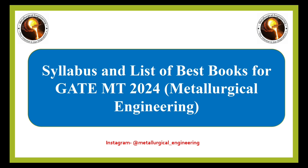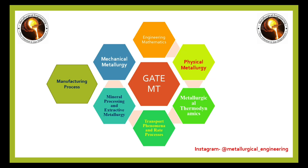These are the sections which are important for the GATE Metallurgical Engineering examination every year: first, Physical Metallurgy; then Metallurgical Thermodynamics and Mechanical Metallurgy; Mineral Processing and Extractive Metallurgy; and this fifth one, Manufacturing Process. Transport Phenomena and Rate Process is also very important for the GATE exam, along with Engineering Mathematics.